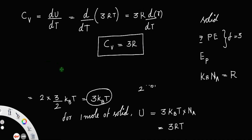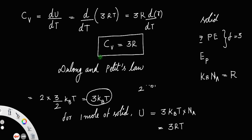And this is called Dulong and Petit's law. The statement Cv equal to 3R is called Dulong and Petit's law.